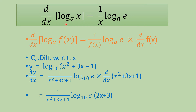Another example: the derivative of log base a of x is simply 1 over x times log base a of e. This is the general rule. In the chain rule, when instead of x you are given a function of x — the derivative of log base a of f(x) — copying this original formula, you write 1 over f(x), multiplied by log base a of e, multiplied by the derivative of f(x). The base remains as it is.